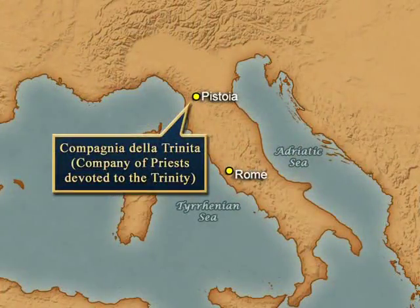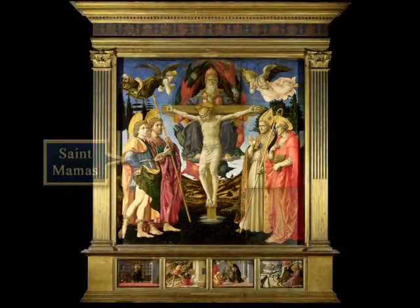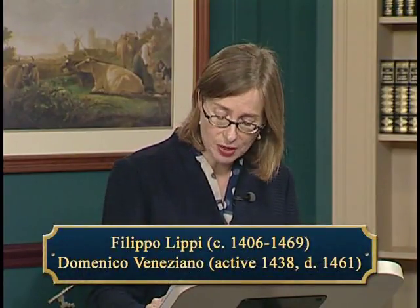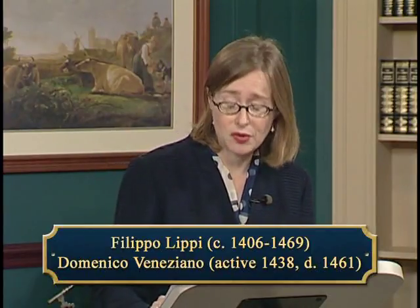The painting was commissioned by the Compagnia della Trinita — the company of priests devoted to the Trinity — for their church in Pistoia in 1455. They set the subject and decided which saints they wanted shown with the Trinity. One company member actually campaigned successfully for Saint Mamas, a rarely depicted early Christian martyr seen on the left. Pesellino worked on the painting in Florence until his early death in 1457. The patrons had two painters — Filippo Lippi and Domenico Veneziano — estimate how much work was left to be done, and they described it as half-finished. Filippo Lippi and his workshop then took over the commission, which was finally finished in 1460. Scholars still debate which parts were done by Lippi's workshop and which were products of Pesellino — it would have been Lippi's task to imitate Pesellino's style so that the altarpiece would have a consistent appearance.